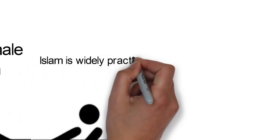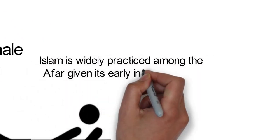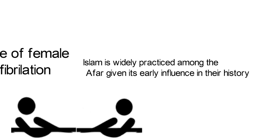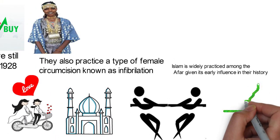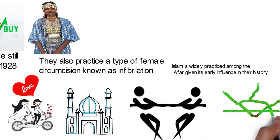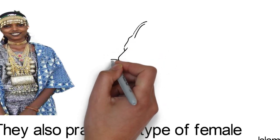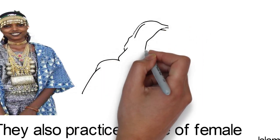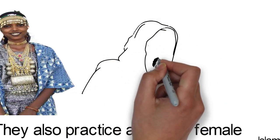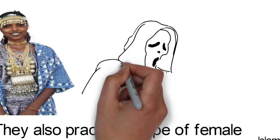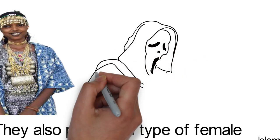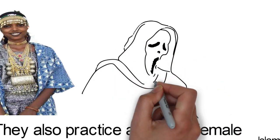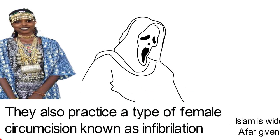Islam is widely practiced among the Afar given its early influence in their history. They also have other beliefs which are not necessarily Islamic. For instance, they believe certain trees have sacred powers. They also observe various religious rites such as anointing their bodies with a type of butter. They believe spirits of the dead are powerful, and Rabena, which is a feast of the dead, is celebrated yearly.